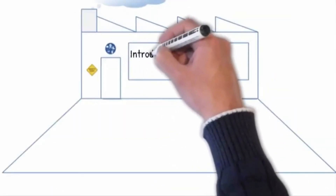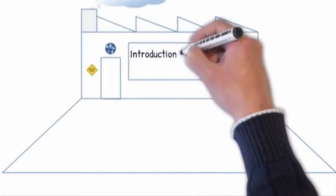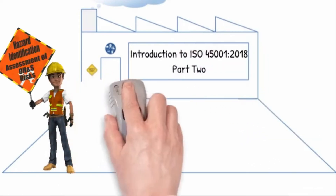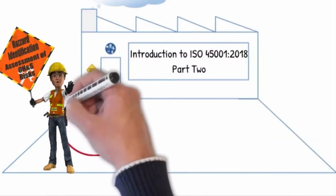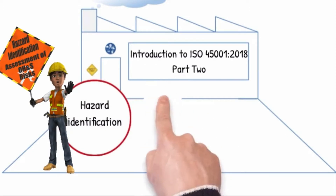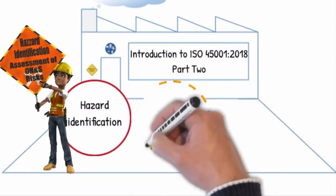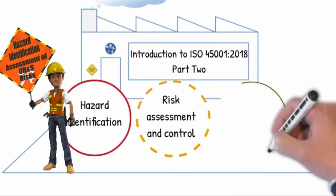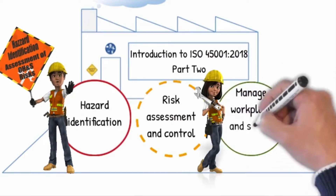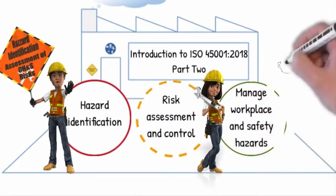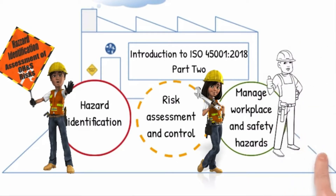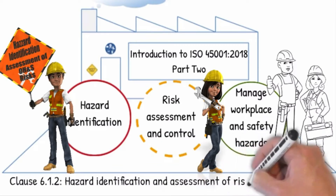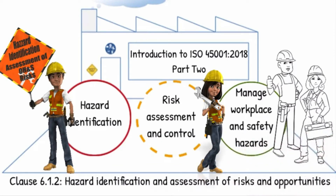Welcome to the Introduction to ISO 45001 2018 Part 2. In this video we are going to look at how to implement a process for hazard identification, risk assessment and control to effectively manage workplace and safety hazards within the organization, by involving the participation of workers and their representatives, according to Clause 6.1.2, hazard identification.